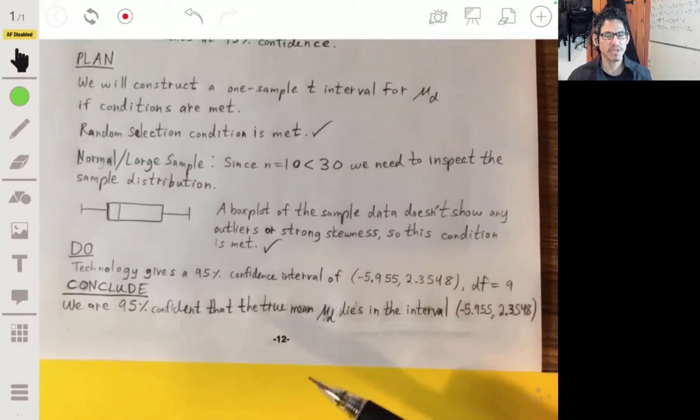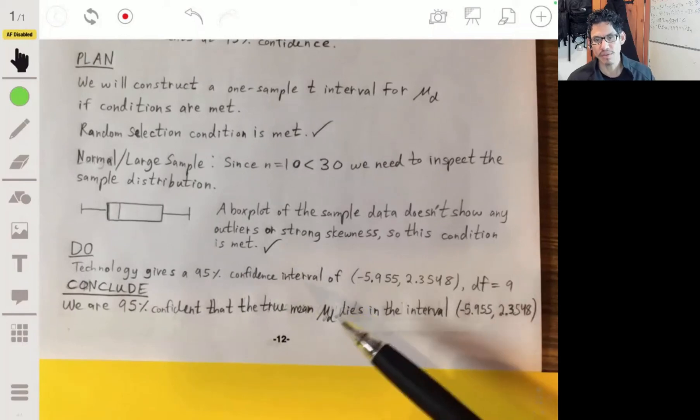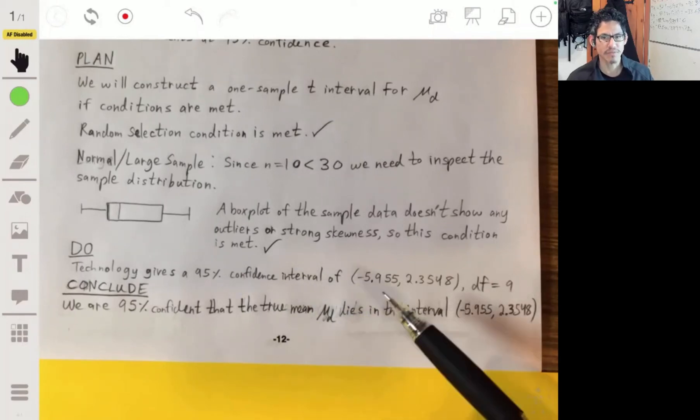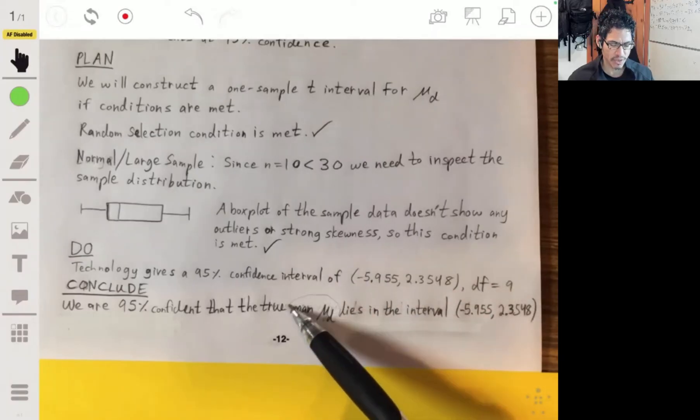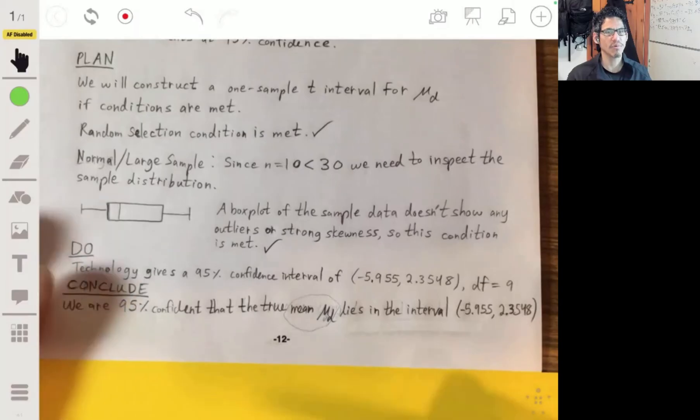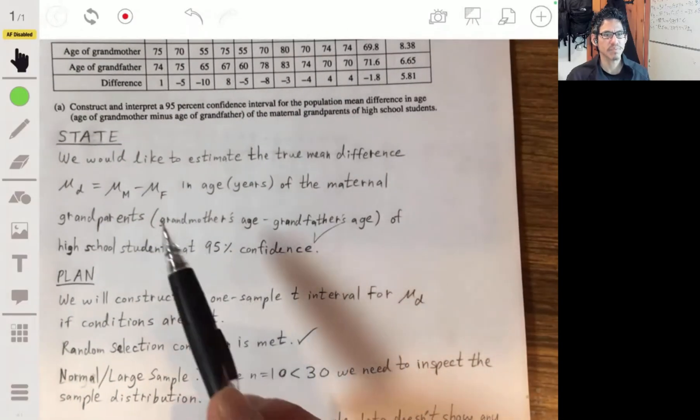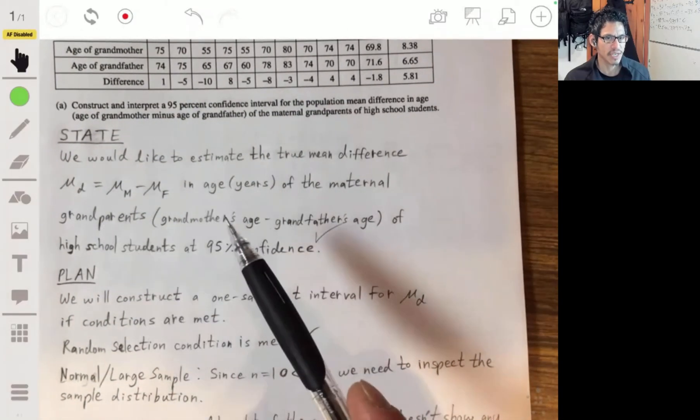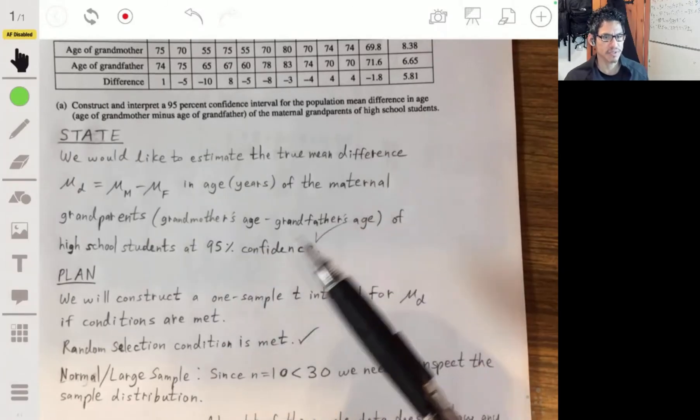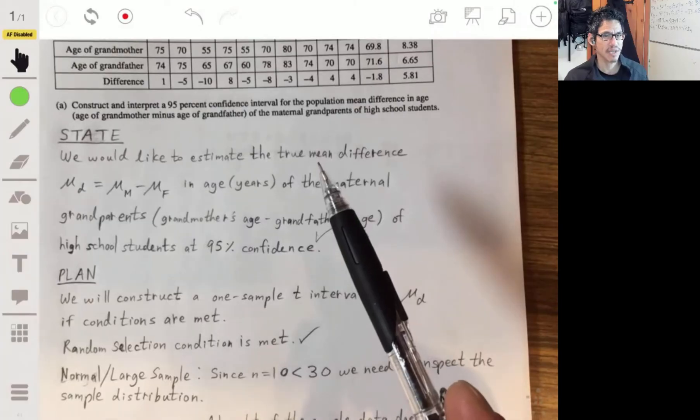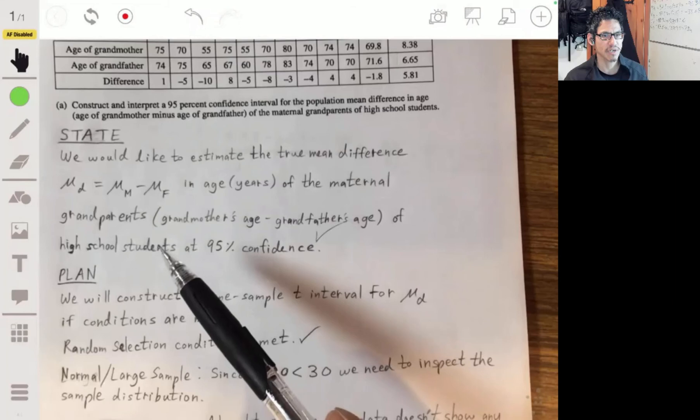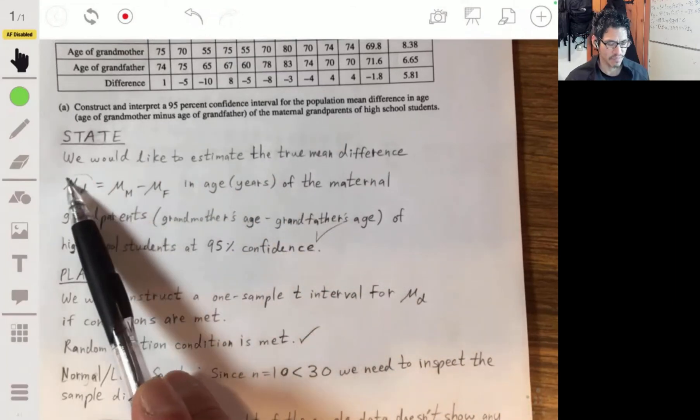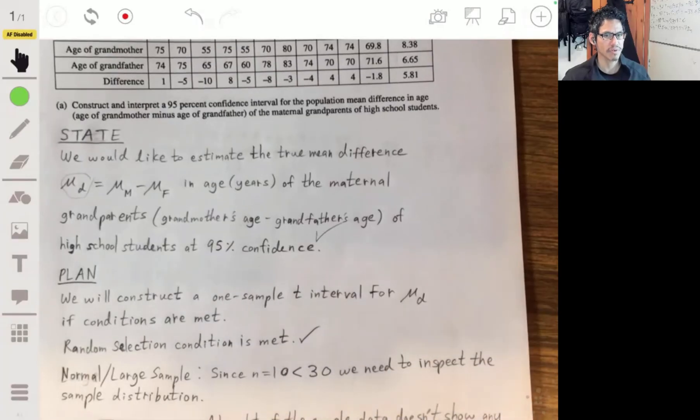And all they have to do now is just put that in context. For 95% confidence, the true mean mu sub-difference or the true mean difference of ages lies in the interval, negative 5.955 to 2.3548. Sometimes they get paranoid. They wonder if they will want you to put the true mean difference, grandma's age minus grandfather's age of the high school students. They want you maybe to repeat this again. But this is why I put it here. I already put this here, and by referring to this, it should be clear to them that you know what you're talking about.